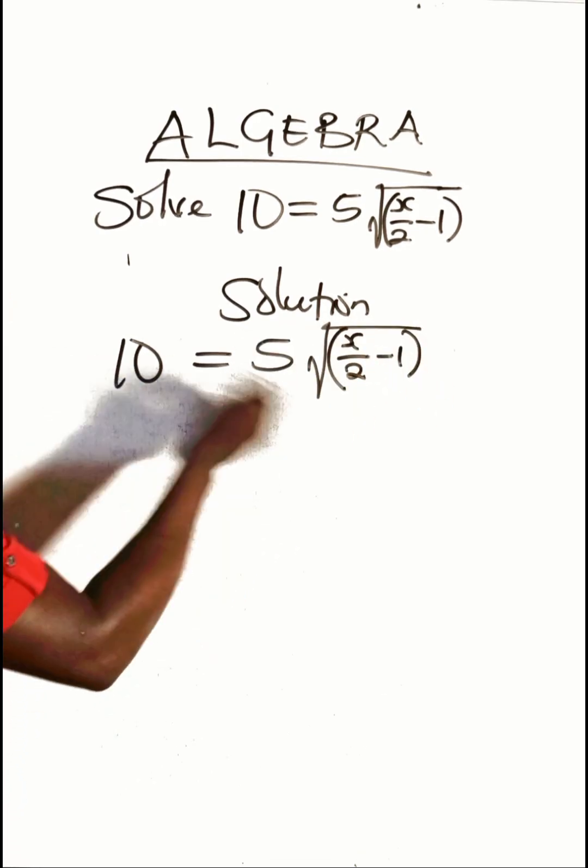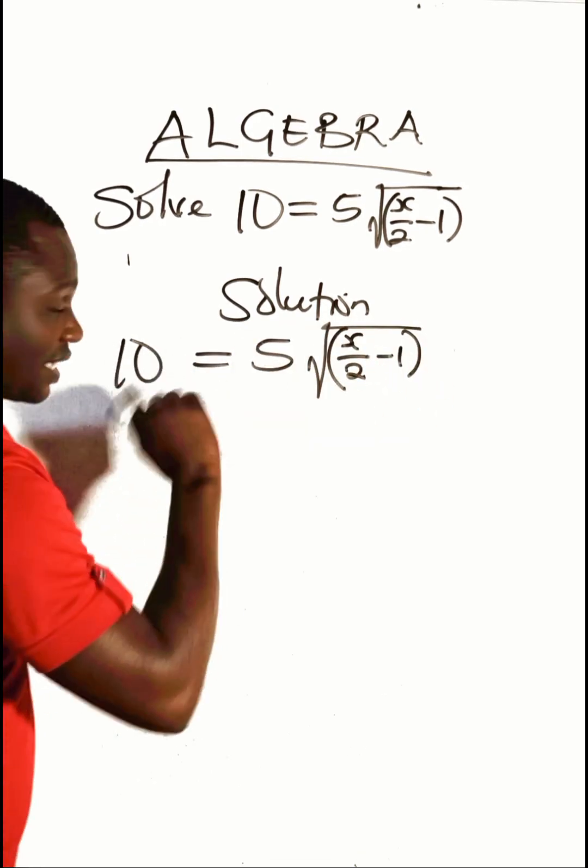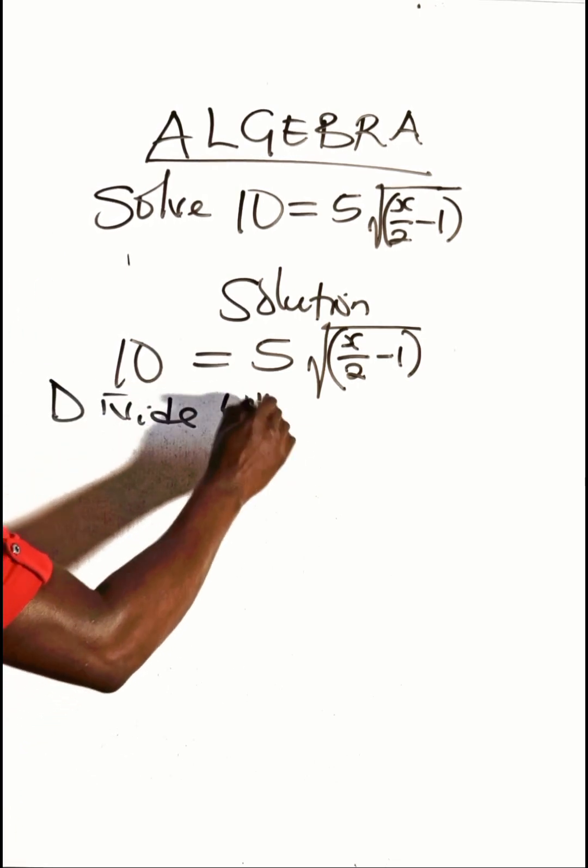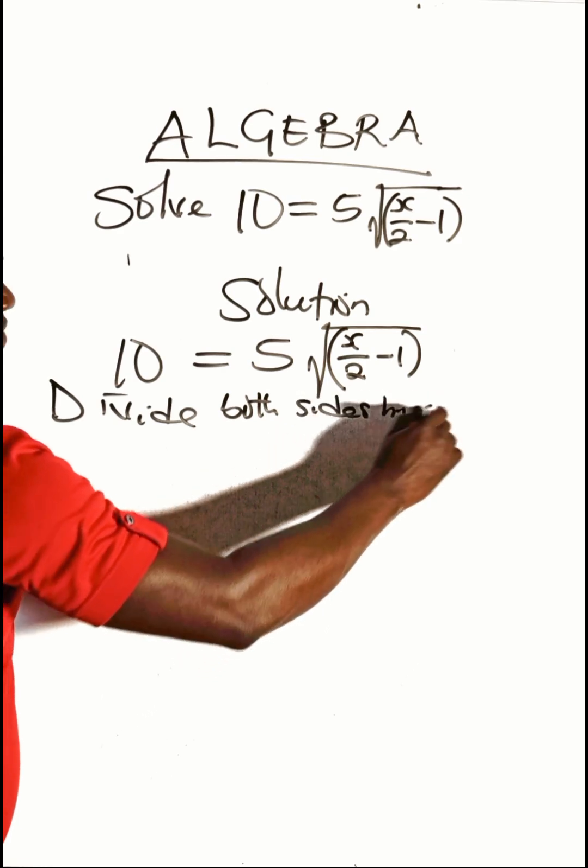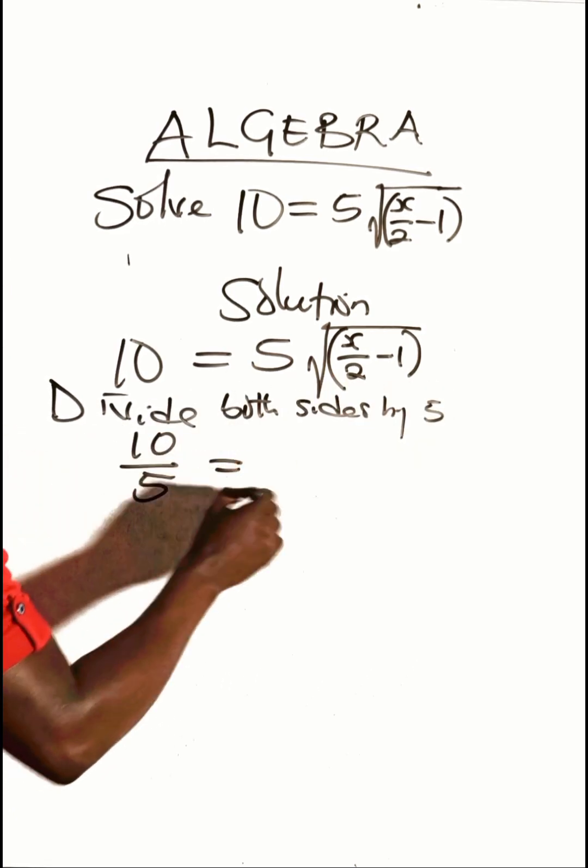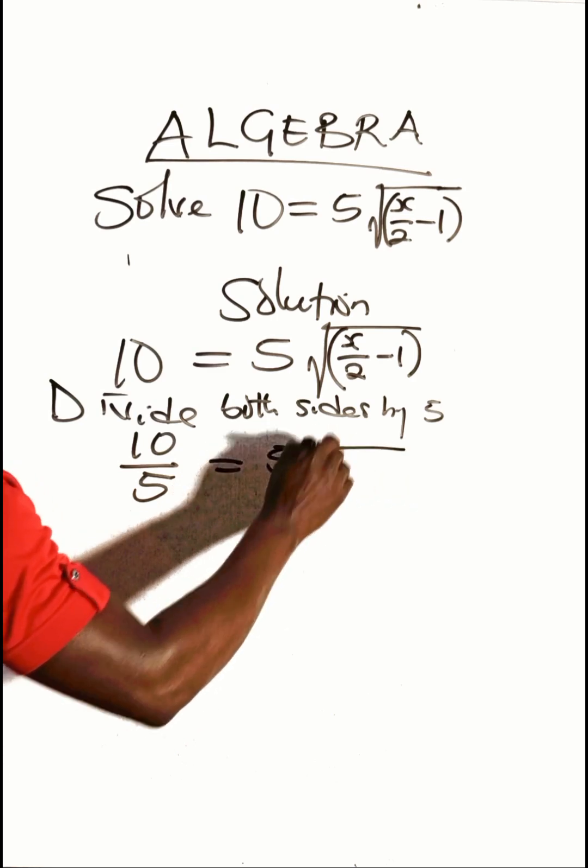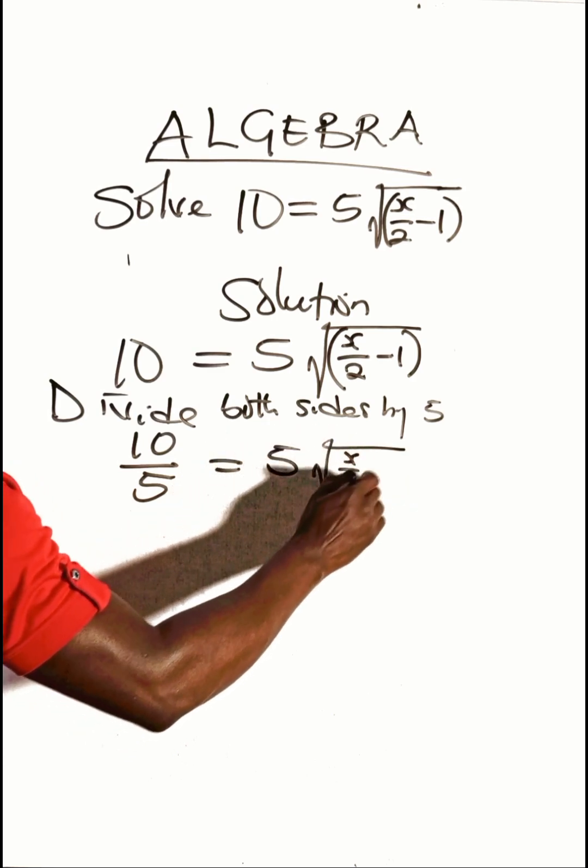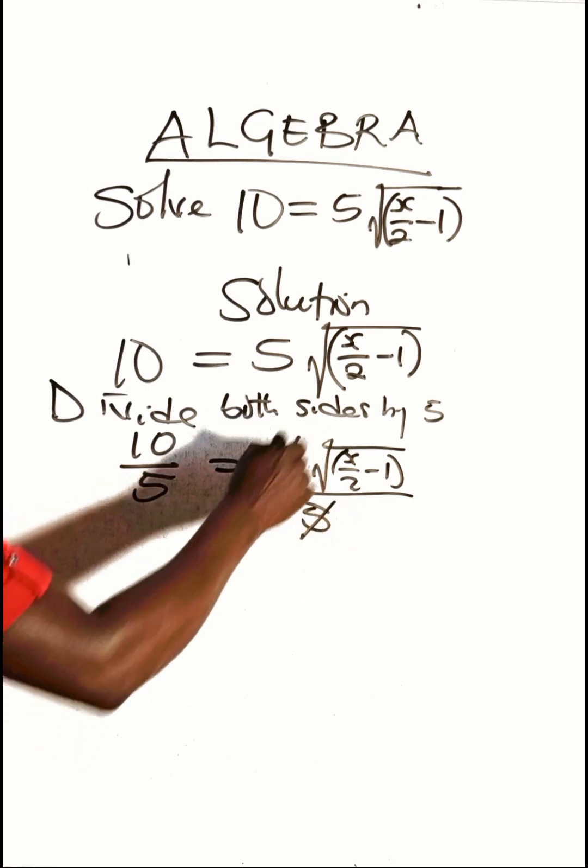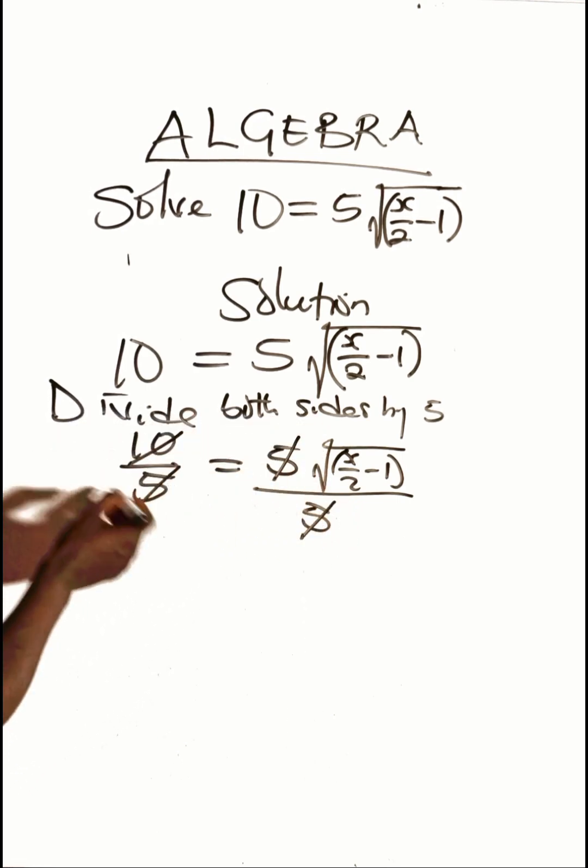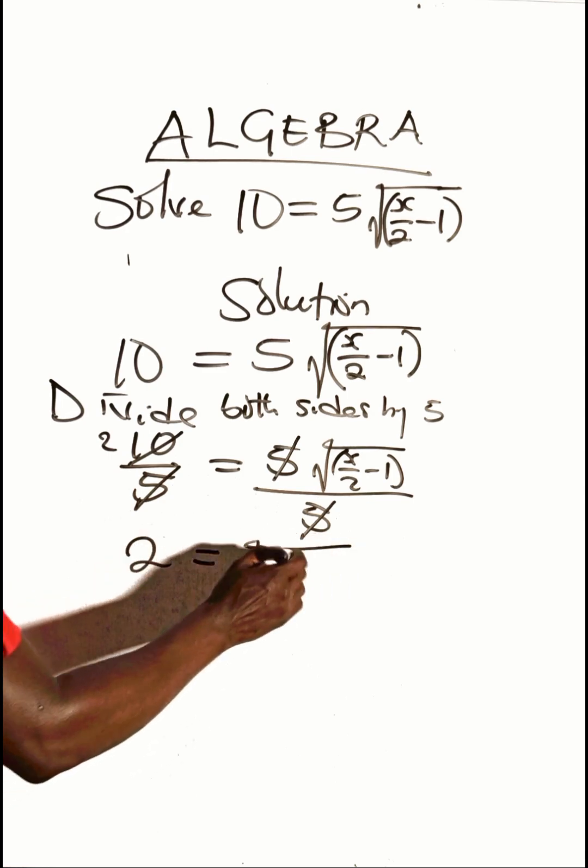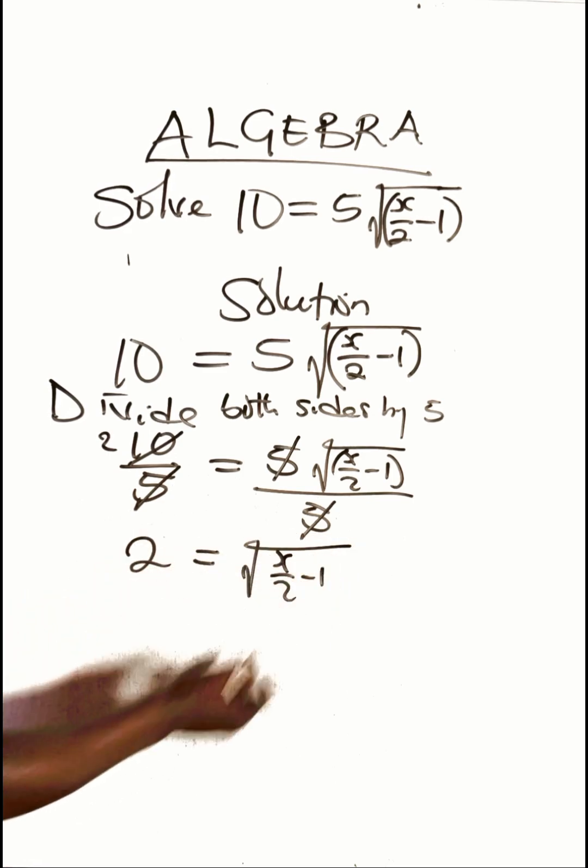And the first step is to divide, to remove this 5, we divide both sides by 5. That is, 10 will be divided by 5 here. Then 5 times the square root of x over 2 minus 1 will also be divided by 5. So 5 will cancel 5. 5 will divide 10 here to give you 2. So we have 2 is equal to the square root of x over 2 minus 1.